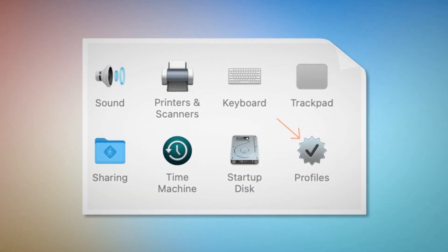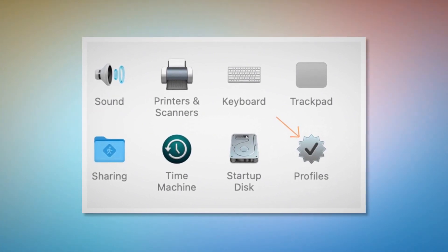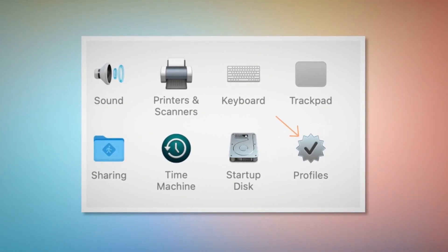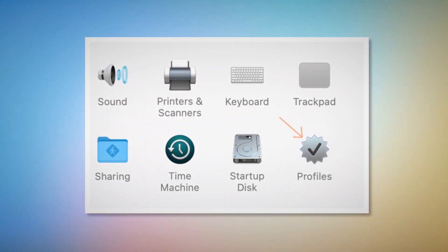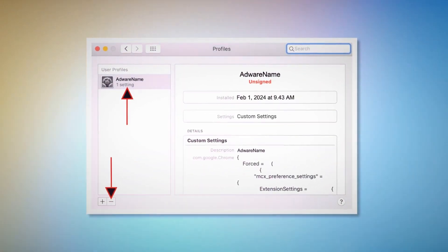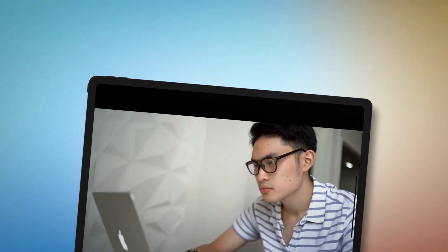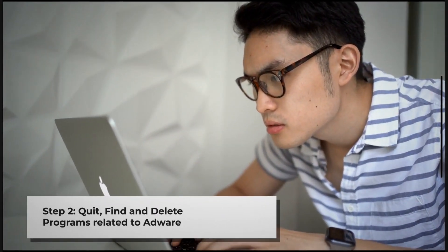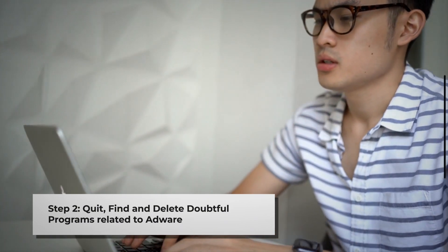But if you can find the Profiles icon, as shown in the screenshot, then click on it. Once you click on the Profiles icon, you will land on a window like this. Select the Unknown or Doubtful Profile and then click the minus button to remove the profile. If you can't find any Profiles icon as mentioned in Step 1, just follow Step 2 directly.